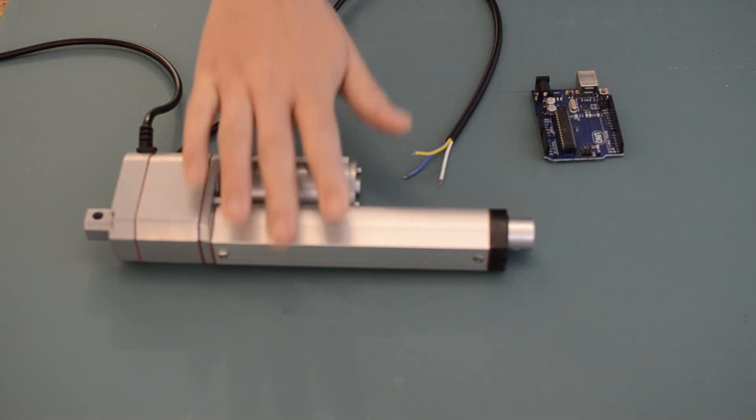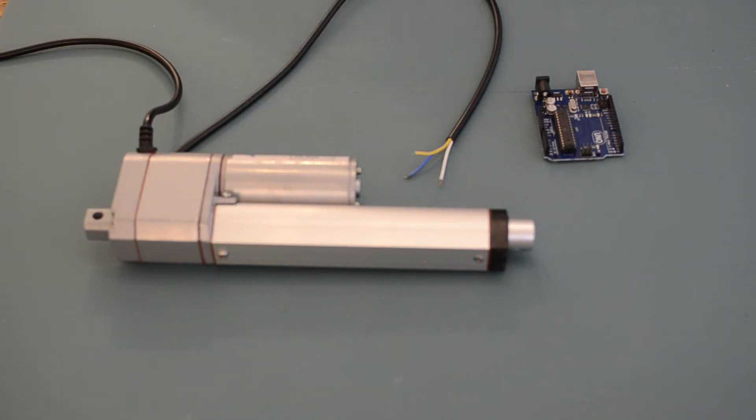A potentiometer is a variable resistor that when used with linear actuators, the resistance changes based on the position of the actuator. This allows us to use them for positional feedback.